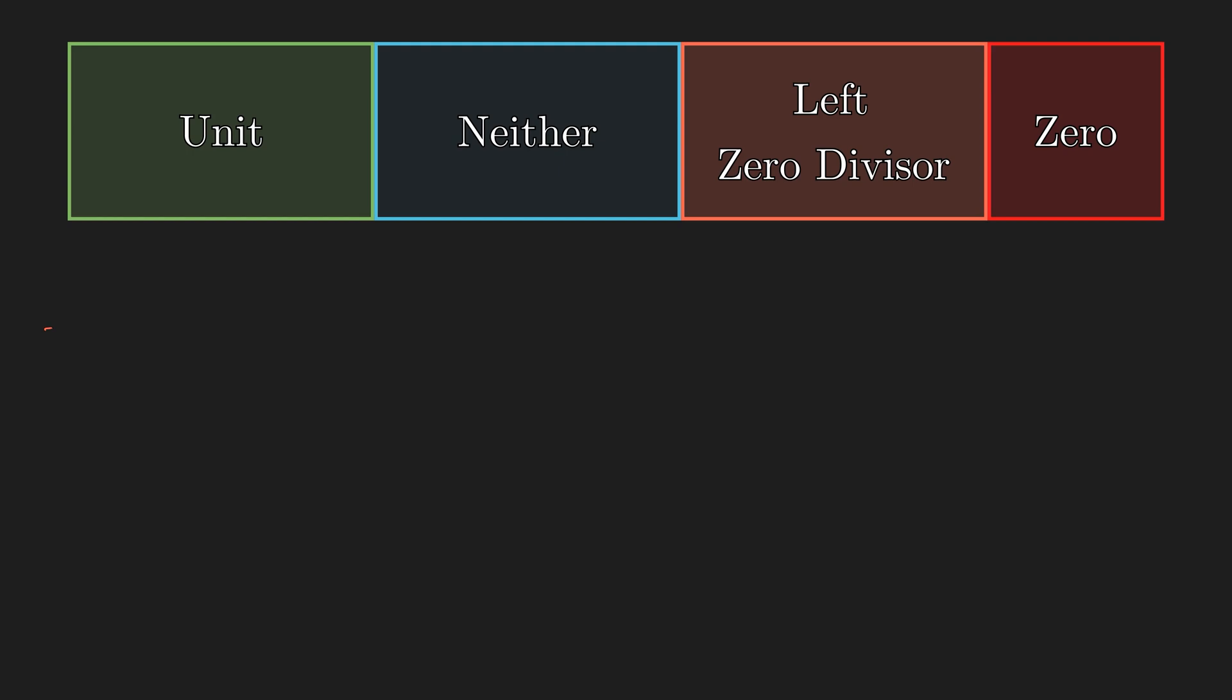If b is equal to c, then obviously a times b is equal to a times c. But what about the converse? If a is equal to zero, it is false. And if a is equal to a left zero divisor, then it is false as well. And if a is a unit, then it is obviously true since we can multiply by a inverse on the left side to cancel a out. So the category that we are most interested in is the neither.